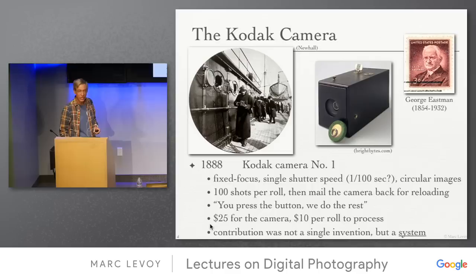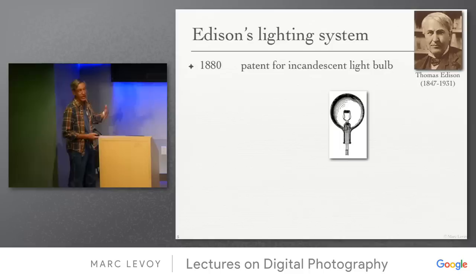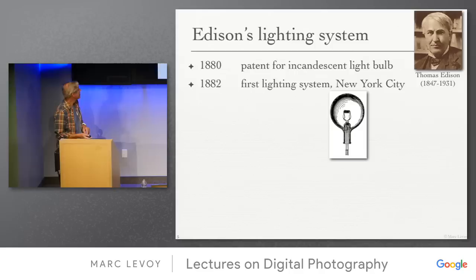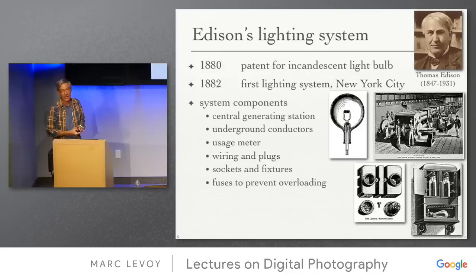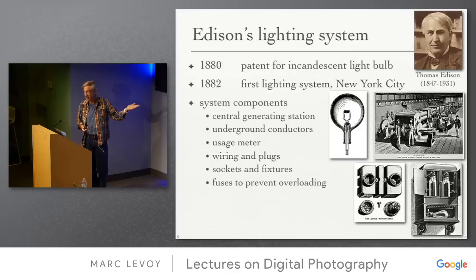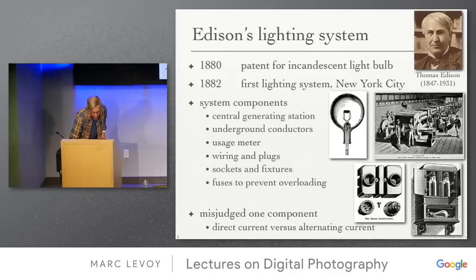This was happening a lot in the late 19th century — people were discovering that the key was to put together a system. The most famous example is Edison's lighting system, which lit up a square mile of New York City with many components he had to invent individually. Of course, as engineers know, he got one part wrong: direct versus alternating current. Nikola Tesla's alternating current was the right answer, Westinghouse had that technology, and Edison fought it for the rest of his life.